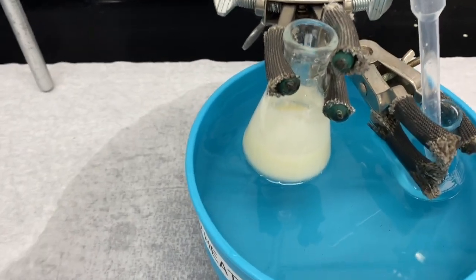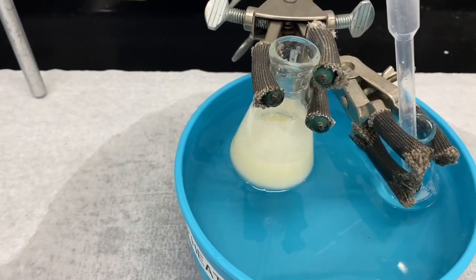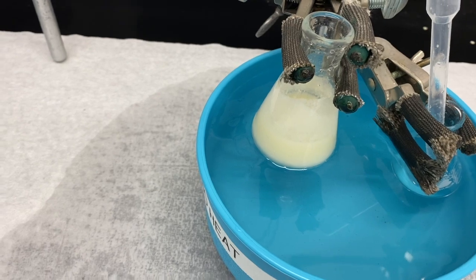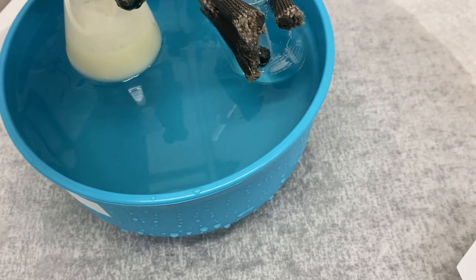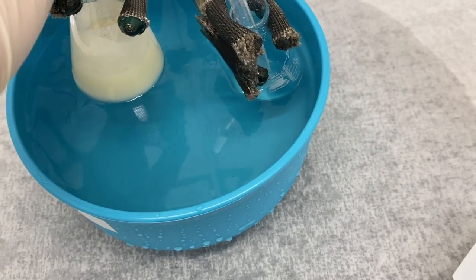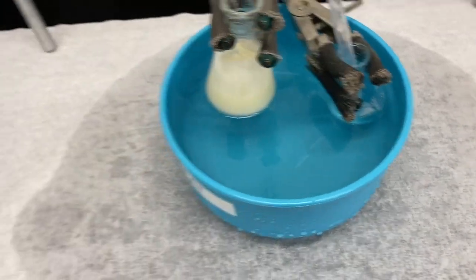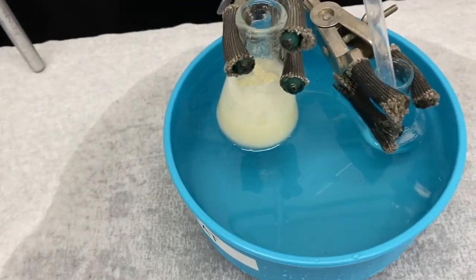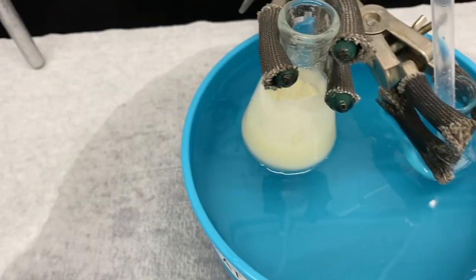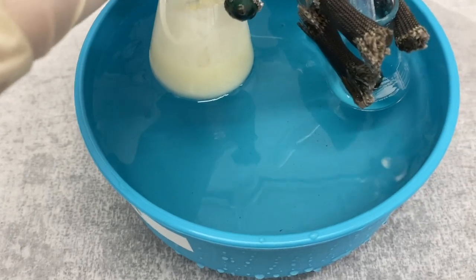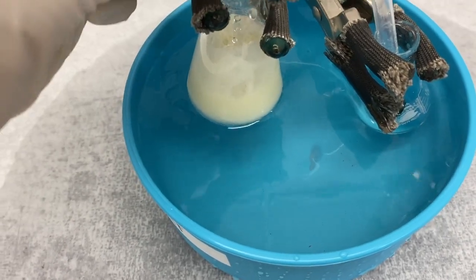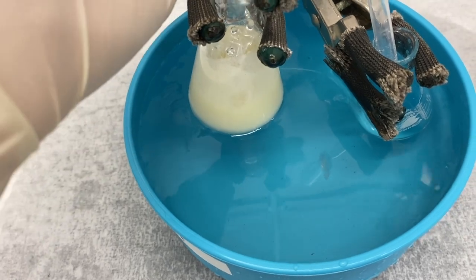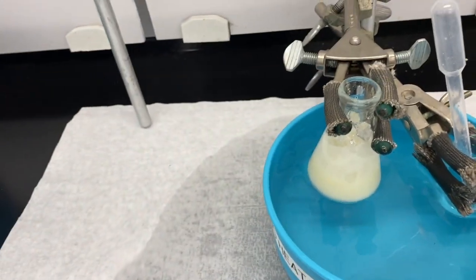So now we're going to quench this reaction by adding just a little bit of small bits of ice. You can see I've just got a little handful here. And we'll probably need this to warm up a little bit over time before we filter so that we don't end up with just lots of ice in our Buchner funnel.